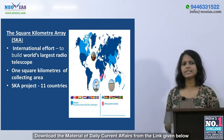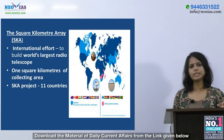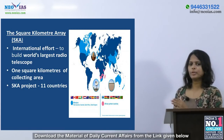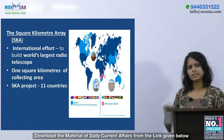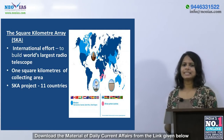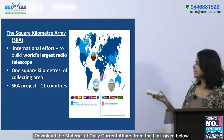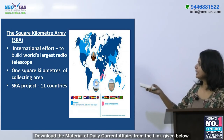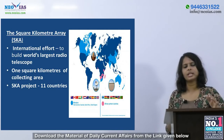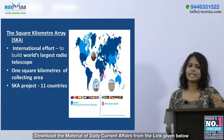Around 11 countries are part of the SKA organization. India is a member, along with Australia, Canada, China, Spain, Italy, New Zealand, South Africa, Sweden, Netherlands, and UK. These member nations are marked in light blue on the map. The MeerKAT telescope will address key science questions like the formation and evolution of galaxies.